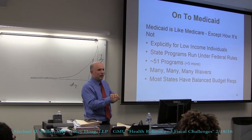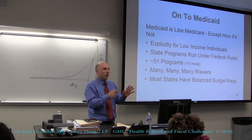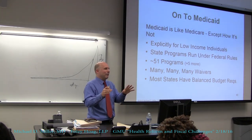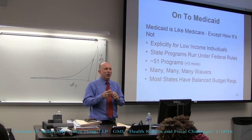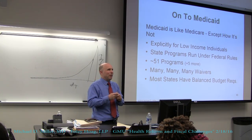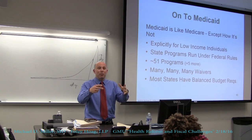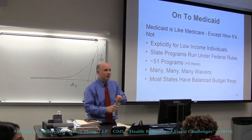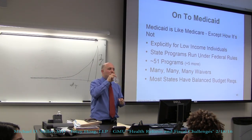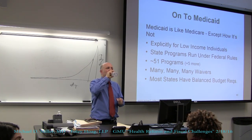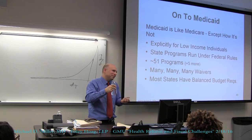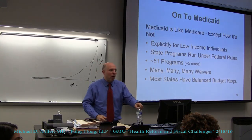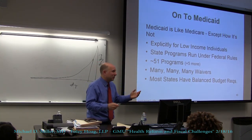Medicaid has many, many waivers, so it's run under federal rules except it's really run under all these waivers. The interesting thing about waivers is they're all supposed to be budget-neutral. A lot of the waivers are three- or five-year waivers, and states get permission to spend more in the first couple of years because things are projected to get better, then they save in the out years. There was a great deal of pressure during the Clinton and Bush 43 administrations to achieve budget neutrality in those waivers.